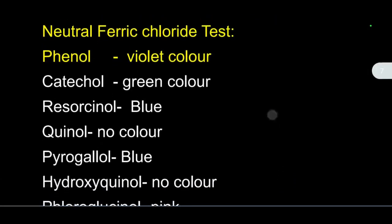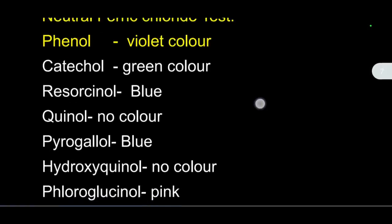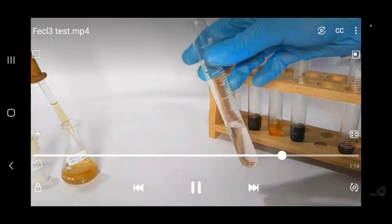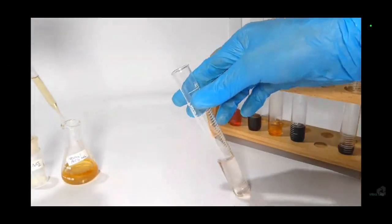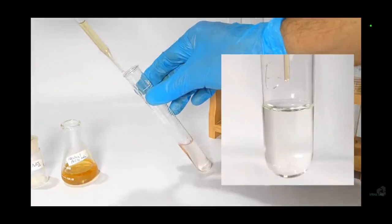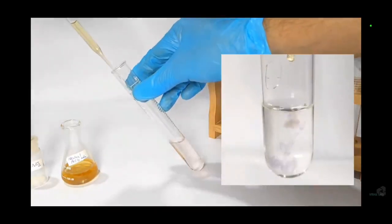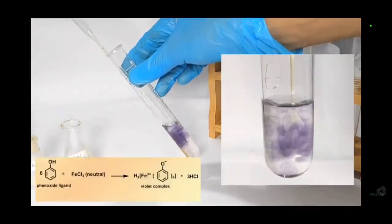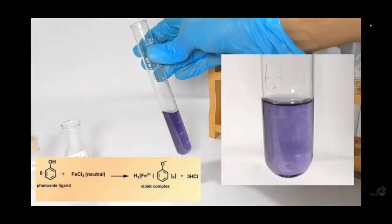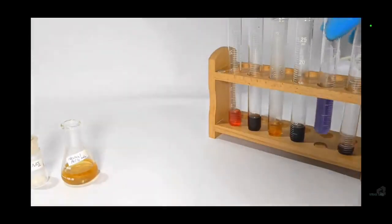The reaction is due to neutral ferric chloride with phenol. We are getting ferric phenolate, which is responsible for violet color. Test for phenol: if you add neutral ferric chloride, it will give a violet color. The reaction is due to the ferric violet complex we are getting.